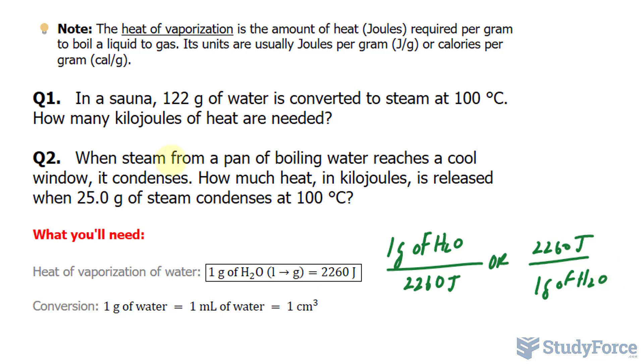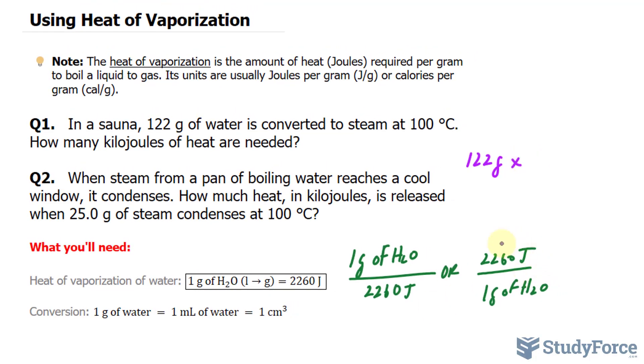So with that being said, we have 122 grams. Here, we have 1 gram, and it requires this much joules. So what we'll do is take 122 grams and multiply it by this version of the conversion ratio, the one I'm hovering over.